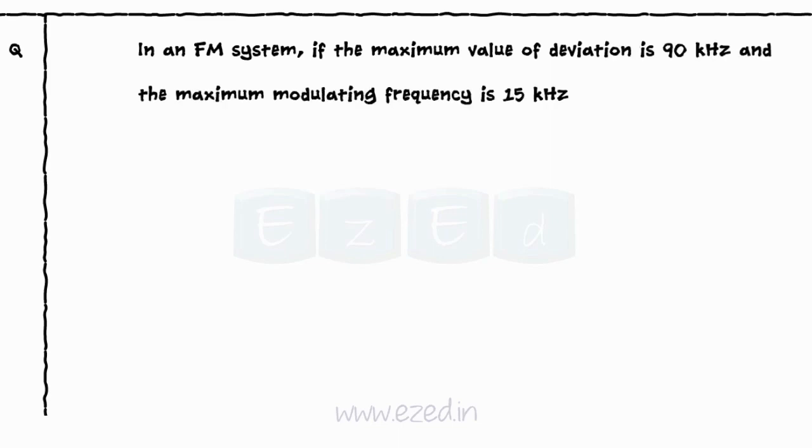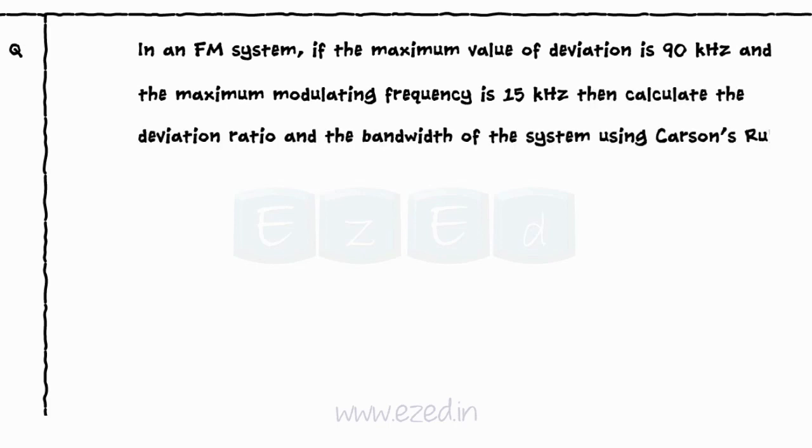Consider an example now. In an FM system, if the maximum value of deviation is 90 kHz and the maximum modulating frequency is 15 kHz, then calculate the deviation ratio and bandwidth of the system using Carson's rule.